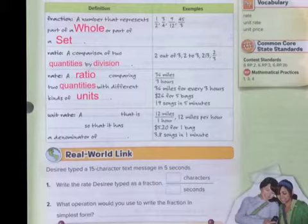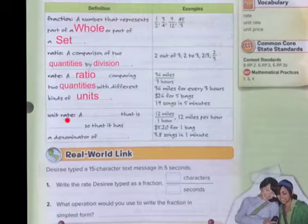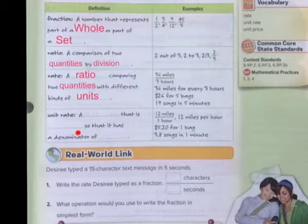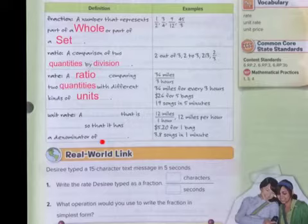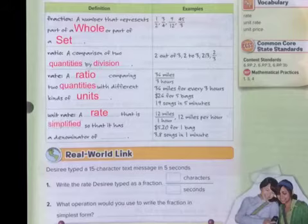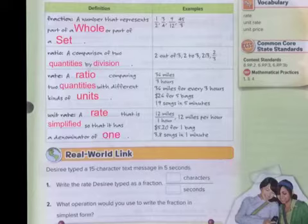So then what is a unit rate? Well, a unit rate, as I mentioned before, unit means one. A unit rate is a rate that is simplified so that it has a denominator of one. So we bring it right down to one, a rate that is simplified so that it has a denominator of one. As you can see here.